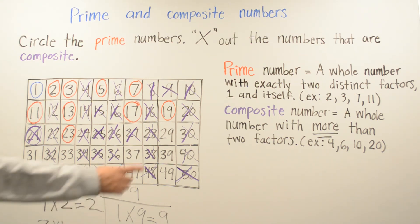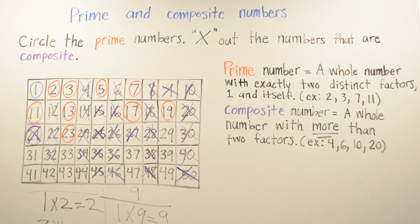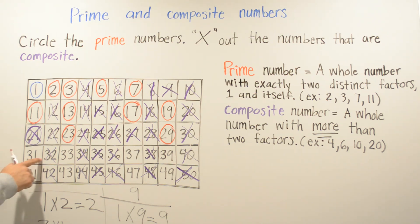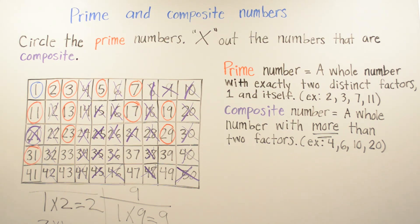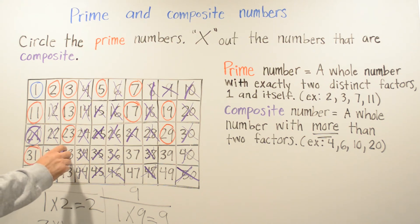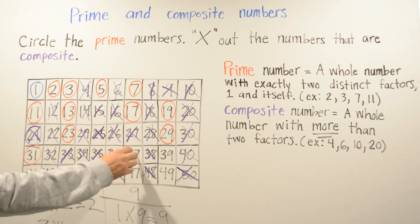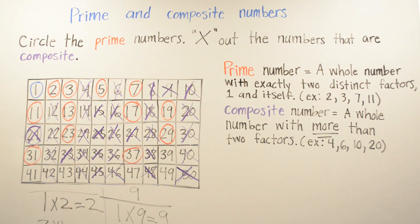Then we go to 29 — 29 is going to be a prime number. Next is 31, which is also a prime number. And 33 is going to be a composite number, so we X out 33. Our next number is 37, and 37 is going to be a prime number. Then 39 is going to be a composite number, so we X out 39.